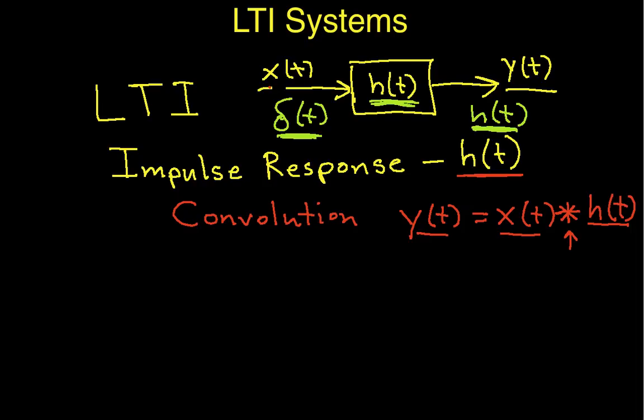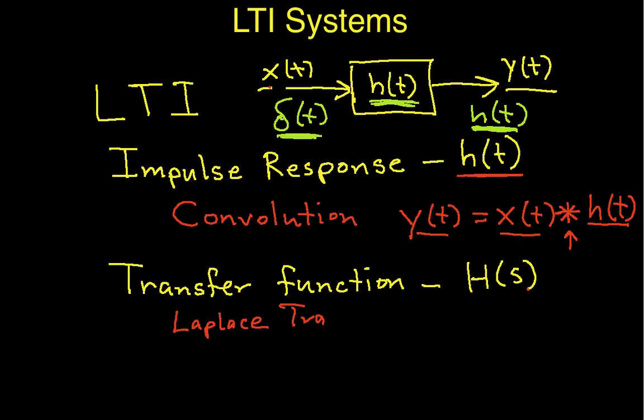So another way that we can characterize the system is by what's called a transfer function. So that's a transfer function. And this ends up getting represented as H of S. And it turns out that the transfer function is used in conjunction with the Laplace transform. That's what this S tells us, is that we're dealing with the Laplace transform. And the transfer function allows us to compute an output, which is an input, times the transfer function.